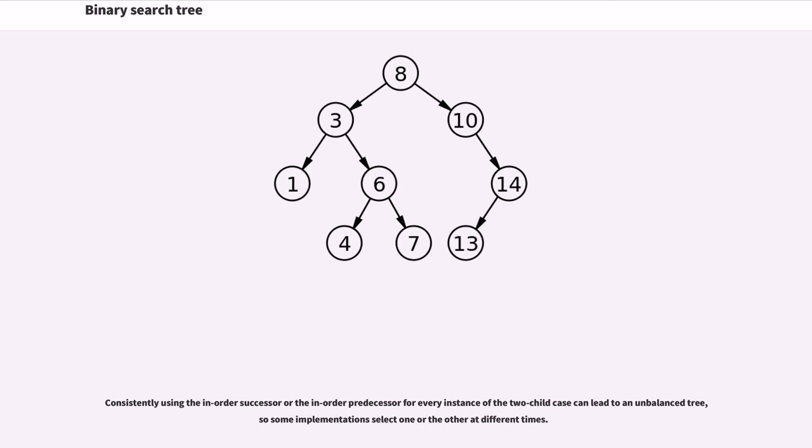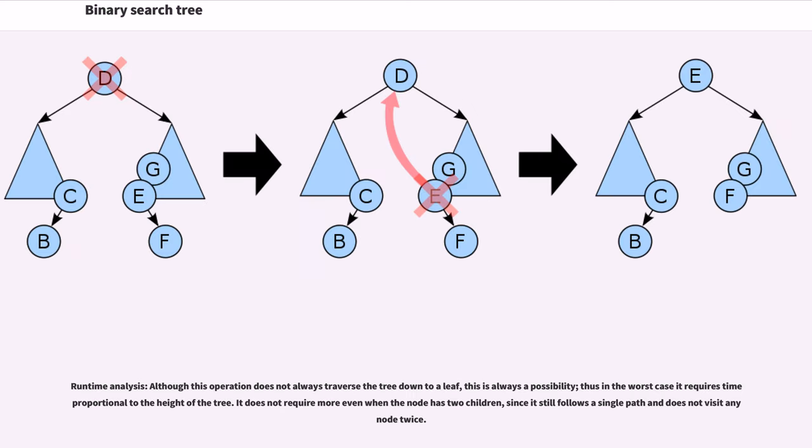Consistently using the in-order successor or the in-order predecessor for every instance of the two-child case can lead to an unbalanced tree, so some implementations select one or the other at different times. Although this operation does not always traverse the tree down to a leaf, this is always a possibility. Thus, in the worst case, it requires time proportional to the height of the tree. It does not require more even when the node has two children, since it still follows a single path and does not visit any node twice.